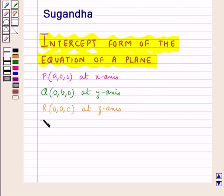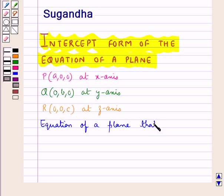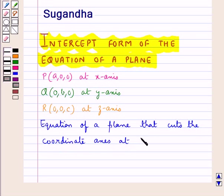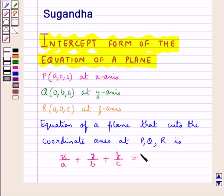The equation of a plane that cuts the coordinate axes at points P, Q, and R is given by x/A + y/B + z/C = 1.